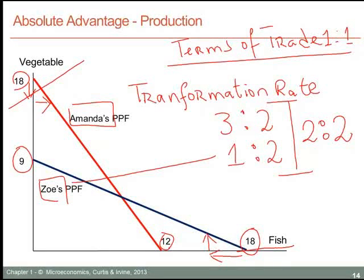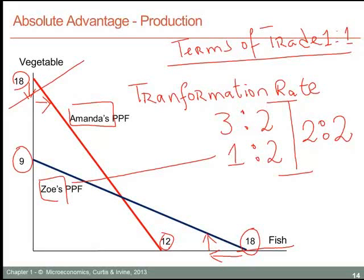Another way of saying the same thing: if she gave up three units of vegetables, then at an exchange rate of two to two — which is to say one to one — she would be able to get three units of fish in return. So an exchange rate of two to two, or one to one, is beneficial for Amanda.